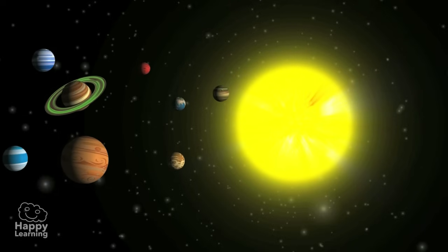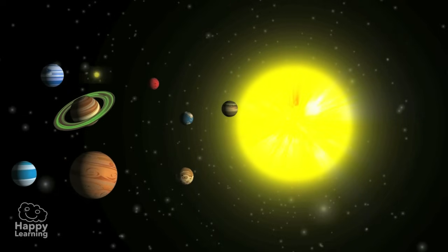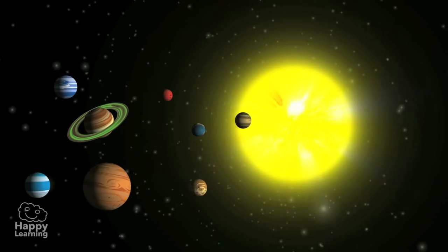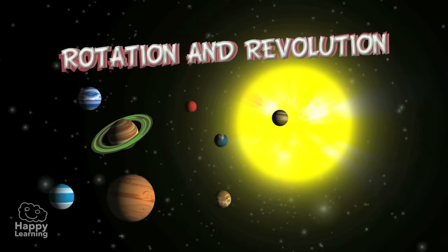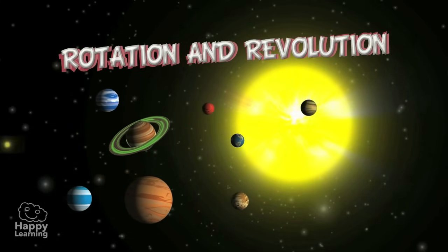Like other planets of the solar system, the Earth moves in two different ways. One is called rotation and the other is called revolution.